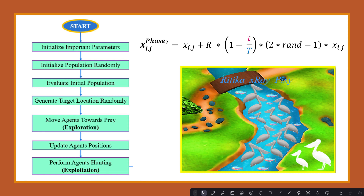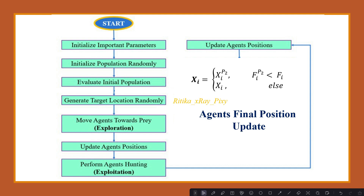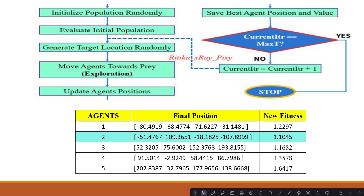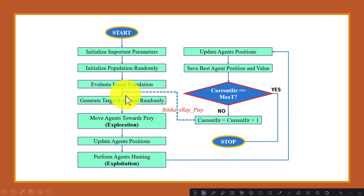We then perform the exploitation phase, update positions for the agents, and compare the older and new positions. If the older position is better, we keep it; otherwise we take the new one. We save the best agent's position and location, and when the stopping condition is met, we stop and display the best solution found in the previous iterations.